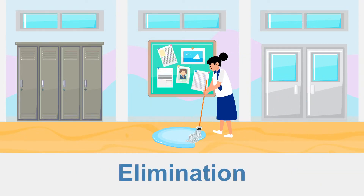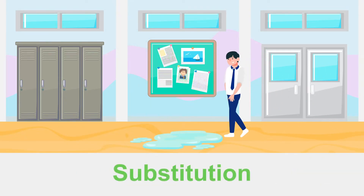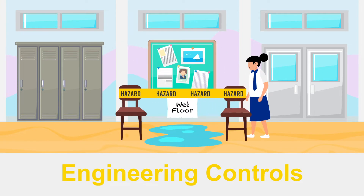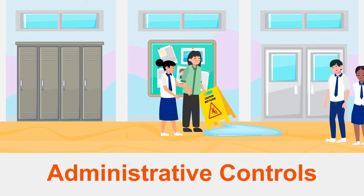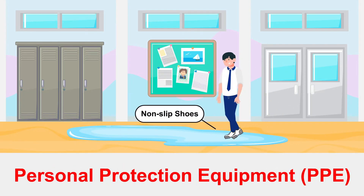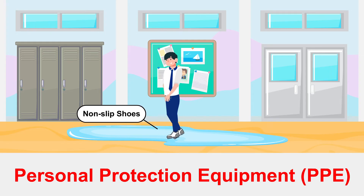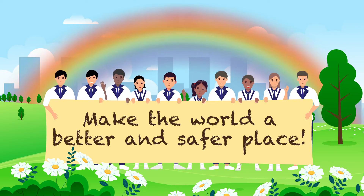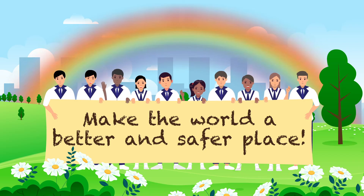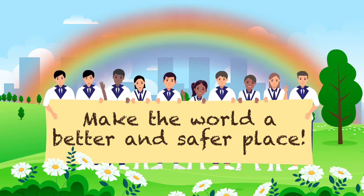The levels are: Elimination, Substitution, Engineering Controls, Administrative Controls, and Personal Protective Equipment. Always practice having a safety mindset such that it becomes second nature to us. Remember, safety is about helping others too. Our lives are precious and priceless, so protect yourselves and one another.